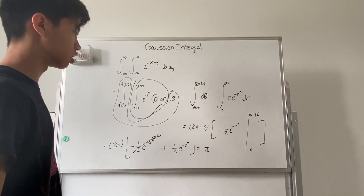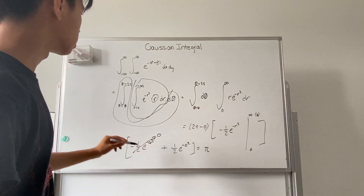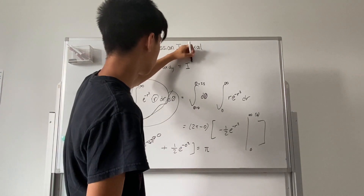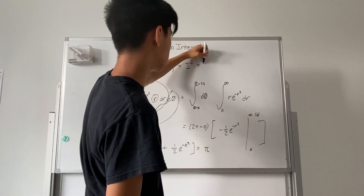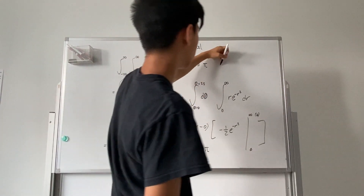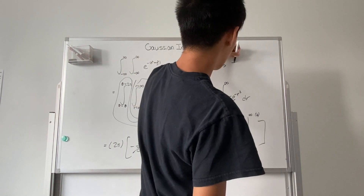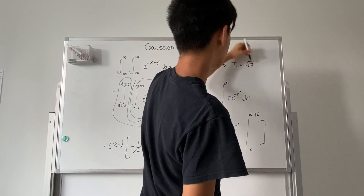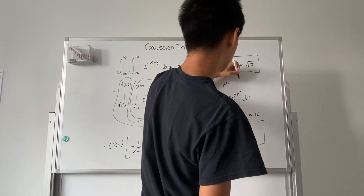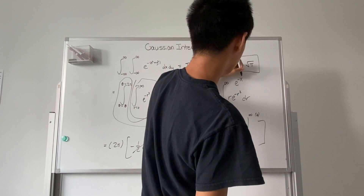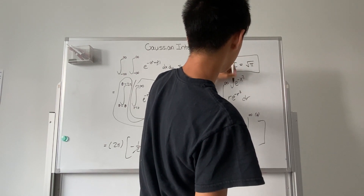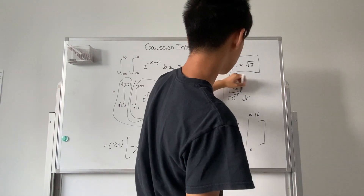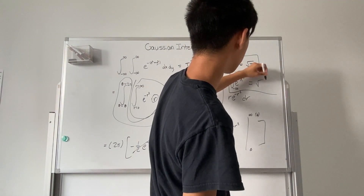But we're not done. Since this is equal to I squared, that means I squared is equal to pi. Therefore, I ends up being the square root of pi. And therefore, the integral from negative infinity to infinity of e to the negative x squared dx equals square root of pi.